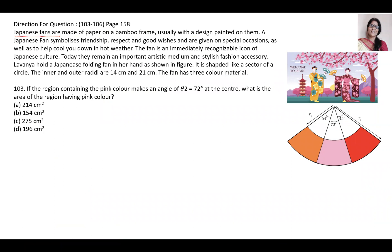The question is: Japanese fans are made on paper on a bamboo frame, usually with the design painted on a web. A Japanese fan symbolizes friendship, respect, and good wishes, and is also given on special occasions as well as to help cool you down in hot weather. The fan is an immediately recognizable icon of Japanese culture. Today they remain an important artistic medium and stylish fashion accessory. Labania holds a Japanese folding fan in a shape like a sector of a circle, with inner and outer radii of the circle given.